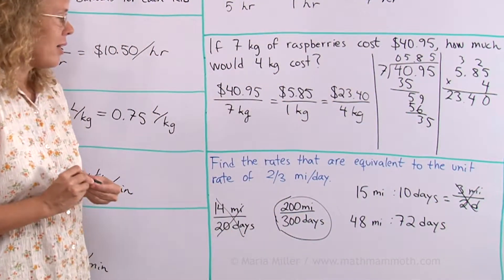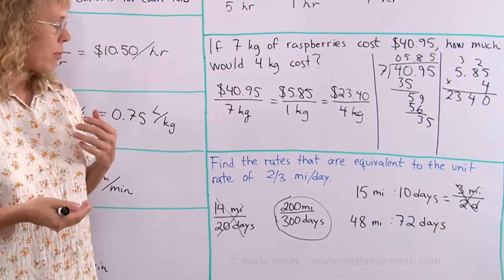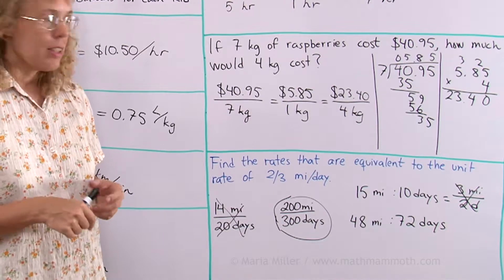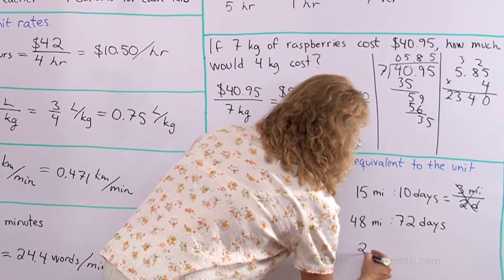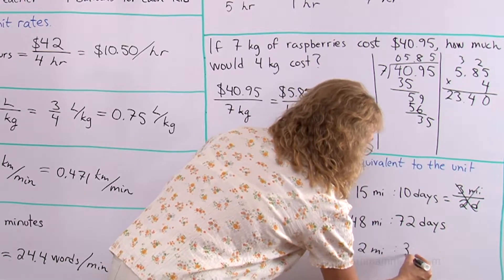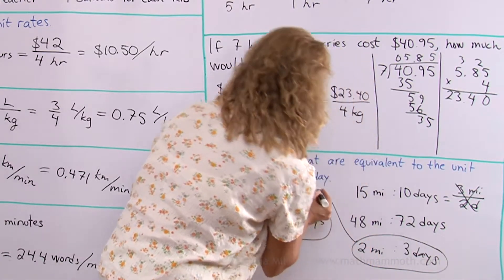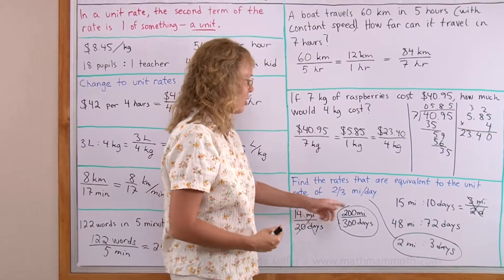And then lastly, 48 miles to 72 days. Both of those numbers are divisible by many same numbers. 4, 12, 24. If I divide both of them by 24, I get 2 here and 3 here. So yes, this is equivalent to that. 2 miles per 3 days is the same as 2 thirds of a mile per day.